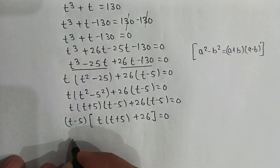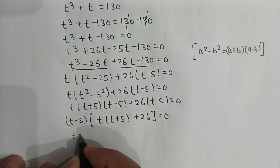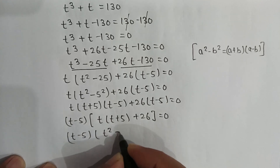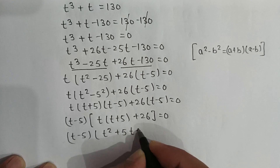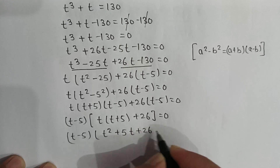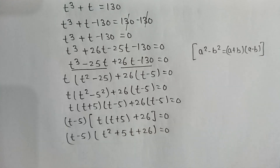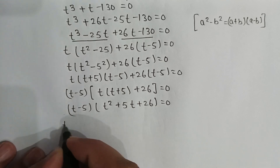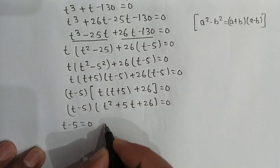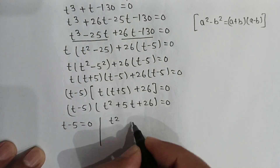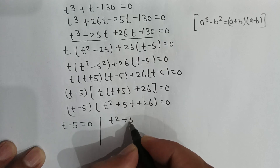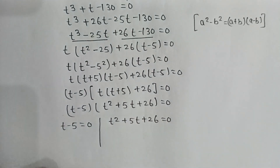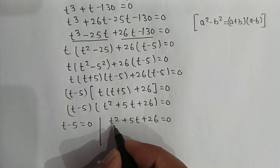Factoring, we get (t minus 5) multiplied by (t squared plus 5t plus 26) is equal to 0. So either t minus 5 equals 0, or t squared plus 5t plus 26 equals 0.